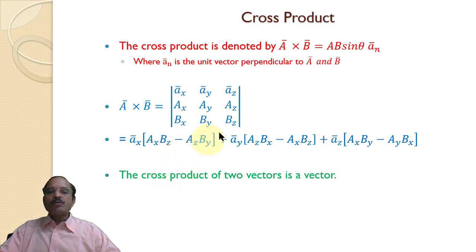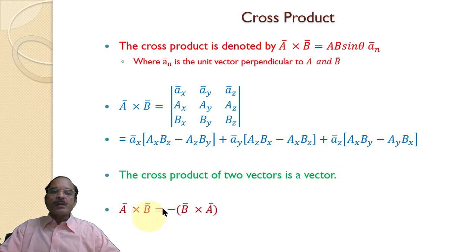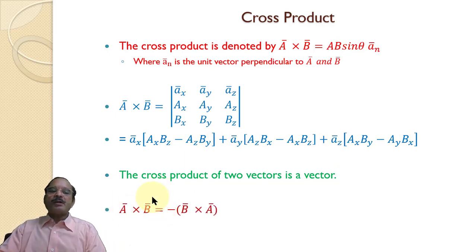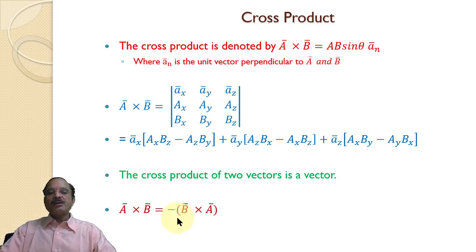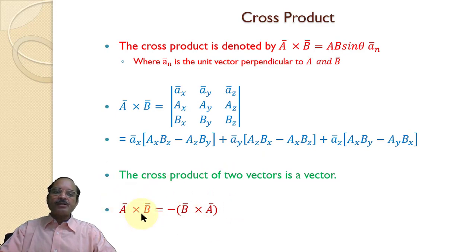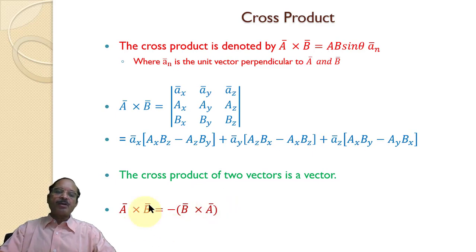The cross product of two vectors is a vector. In case of the dot product, a·b equals b·a, whereas in case of the cross product, a × b and b × a are not the same — the direction is opposite. So a × b equals minus b × a.